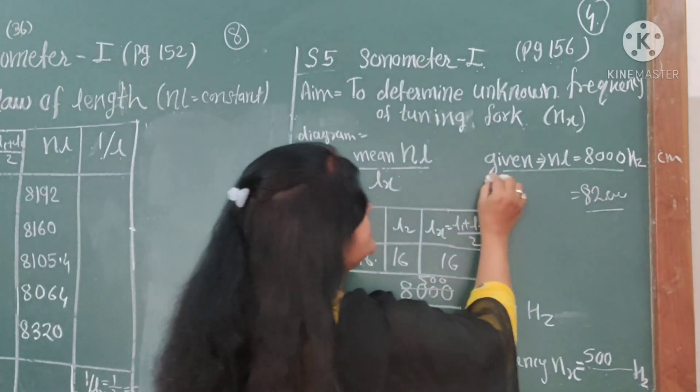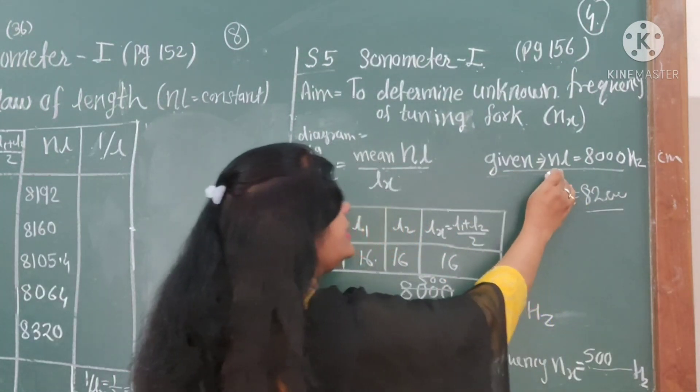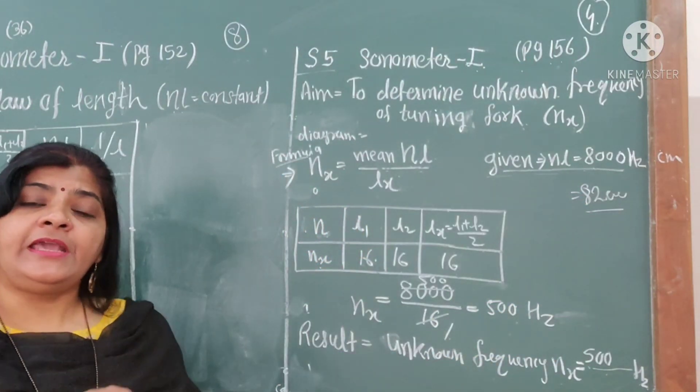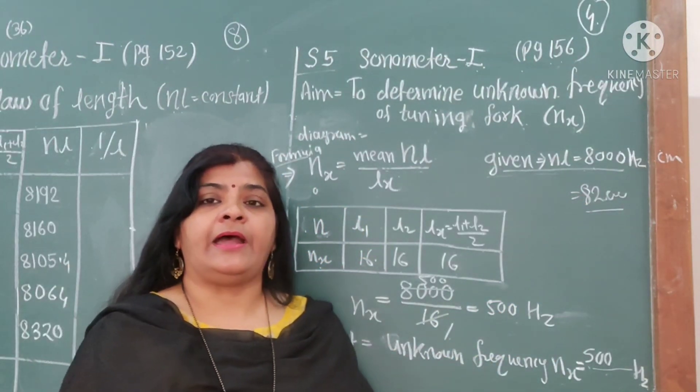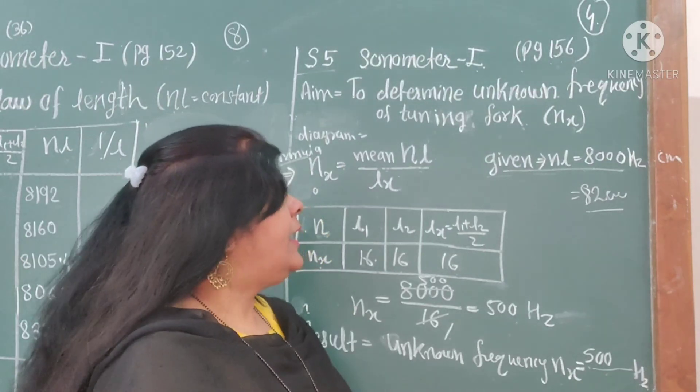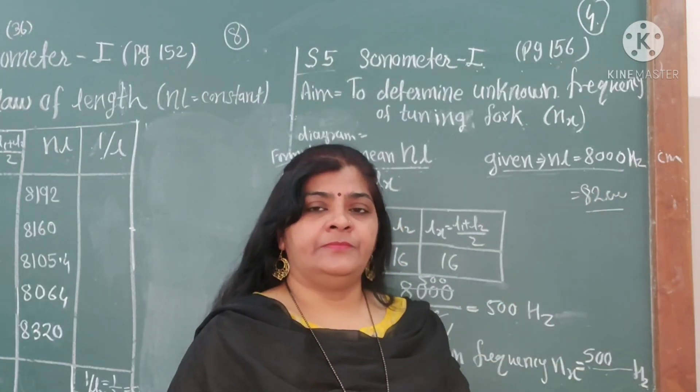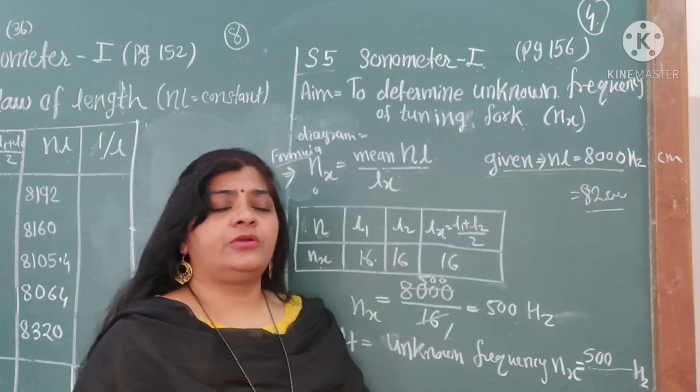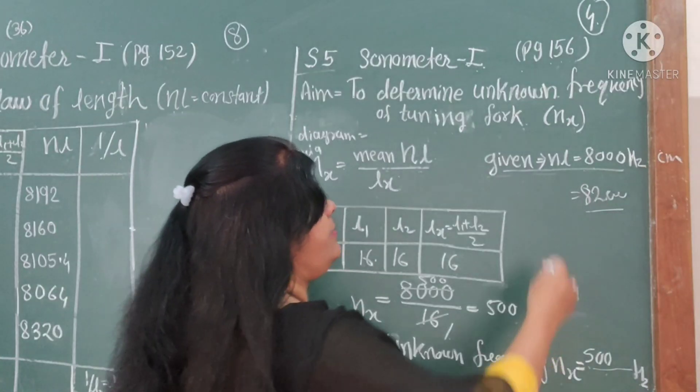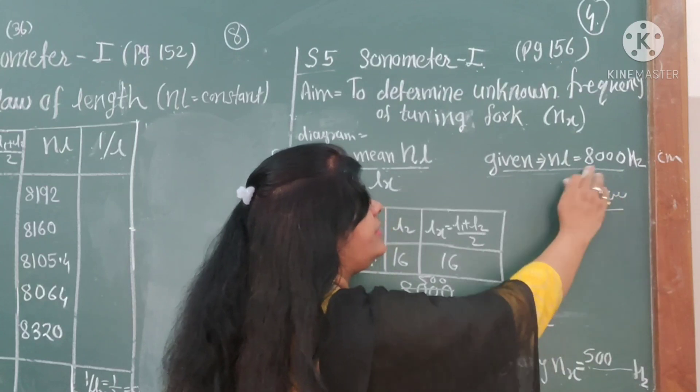Now one more advantage: this NL is given already in the question. It is given that NL equals 8000 hertz per centimeter, or any number which will be given to you. During the exam, the NL value will be given to you.